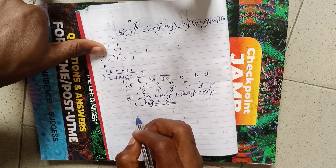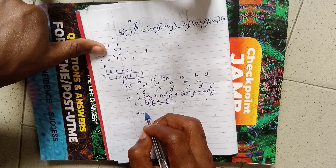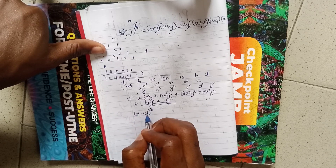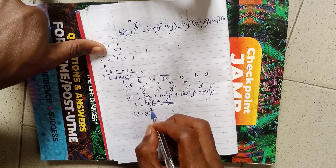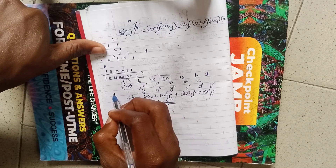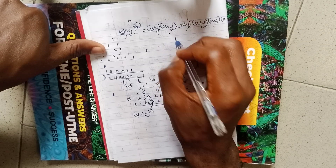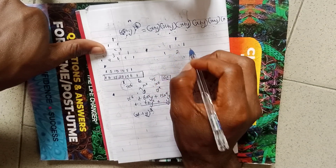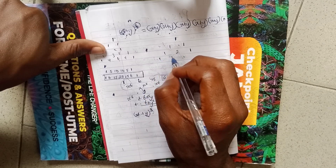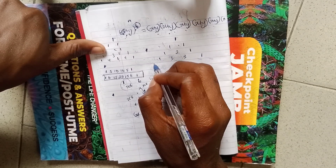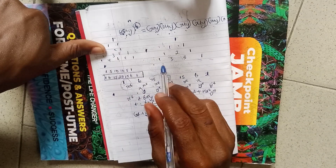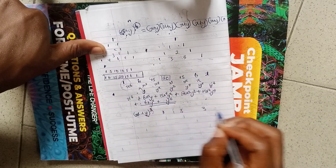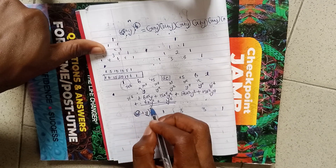Let's do one more example. Say we have (x + y) to the power of three. I need to look for the coefficient. At n equal to zero: 1; n equal to one: 1 1; n equal to two: 1 2 1; n equal to three: 1 3 3 1. So that is what I'm looking for — 1 3 3 1.